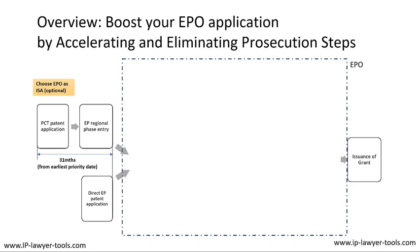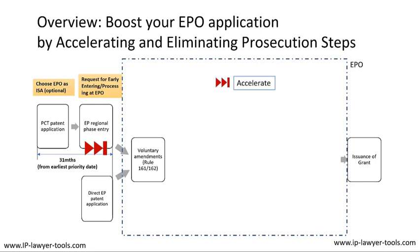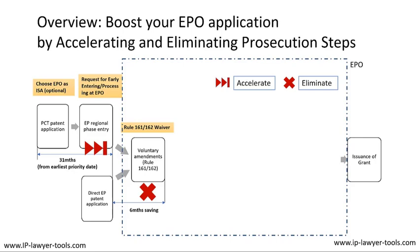Here we are at the first step you can take to accelerate the grant of an EPO patent. You request early entering processing at the EPO — I have put my Accelerate symbol here, which I will use throughout the entire course. It is the fast-forward button symbol from your tape recorder. After filing a direct EPO application or entering the EPO regional phase, you receive a letter allowing voluntary amendments under Rule 161/162 of the European Patent Convention. By filing a waiver of this Rule 161/162 notification — marked with a cross symbol for eliminating the process — you save six months in the grant process.